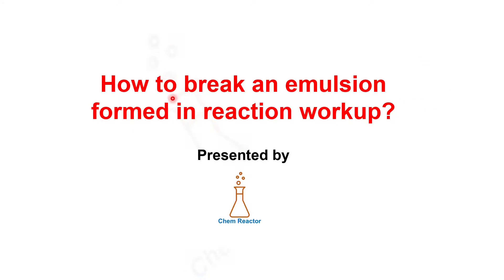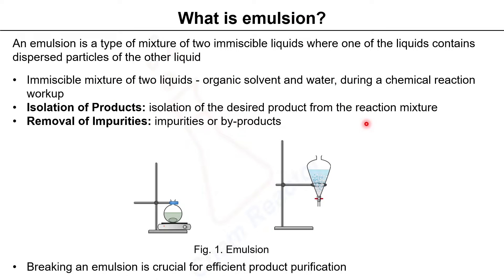Welcome to Chem Reactor. Today I'm going to talk about how to break an emulsion formed in reaction workup. An emulsion is a type of mixture of two immiscible liquids where one of the liquids contains dispersed particles of the other liquid.